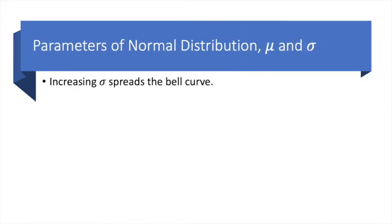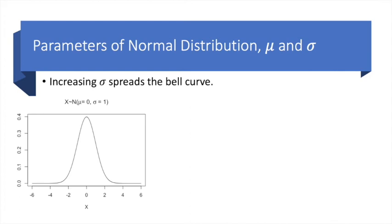Now, normal distributions can be infinitely many. This is because the normal distribution has two parameters, namely mu or mean and sigma or standard deviation. Changing the values of these parameters changes the distribution. Let's focus on changing the standard deviation sigma in this slide. Sometimes sigma squared or variance is used instead of the standard deviation, but the effect is the same.